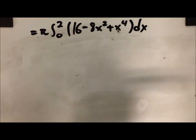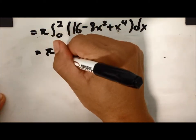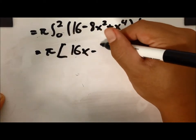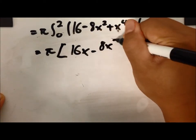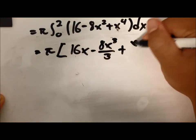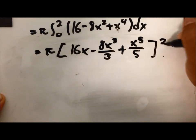Now we're going to integrate. So it would be pi 16x minus 8x cubed over 3 plus x to the power of 5 over 5, 2 to 0.